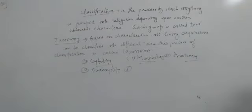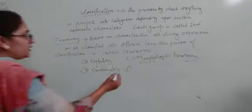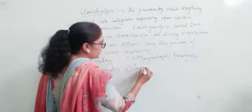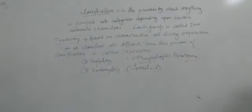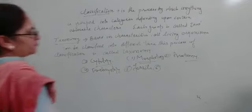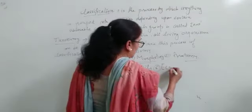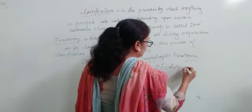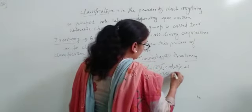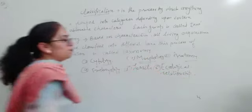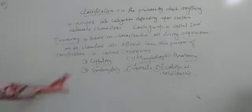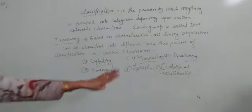Fifth one is fossils. We study the old organisms, study fossils, and make groups. And sixth and the last feature is ecological relationships. So these are the basic six points. After study of all these six points we will make the groups.